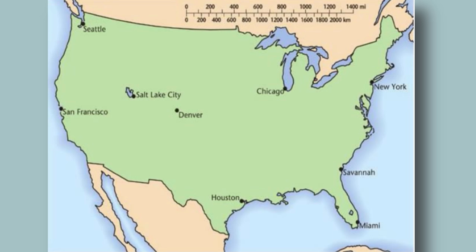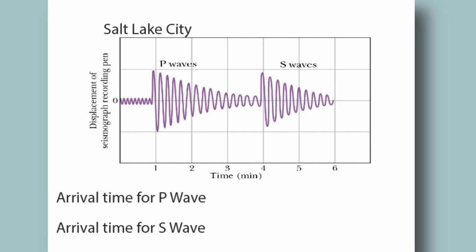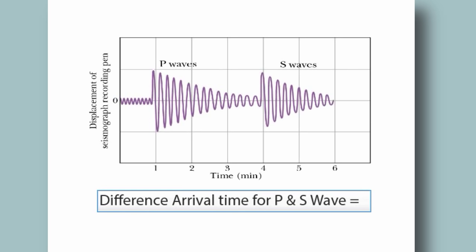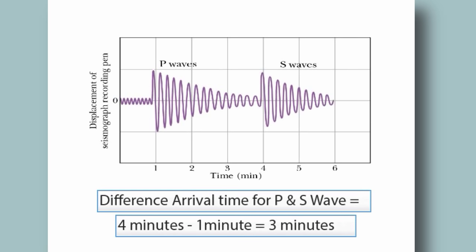For Salt Lake City, it takes one minute for the P wave to reach their seismograph, and four minutes for the S wave. So that means we have recorded a three minute time lag between the arrival of the P and S waves.